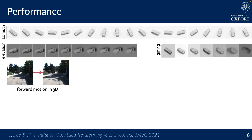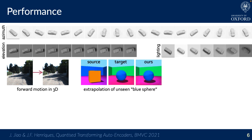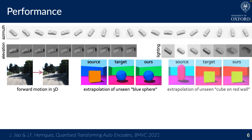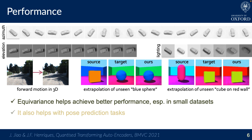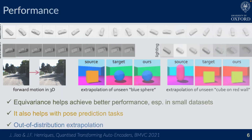Our experiments explore low-data regimes as well as extrapolation of concepts and compositionality. For example, a network that did not see blue spheres during training was still able to reconstruct this concept by combining color and shape activations.